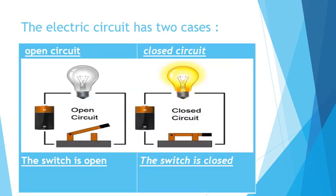The electric circuit has two cases: it's either opened or closed. The components of the circuit are four: a battery, a lamp, a wire, and a switch. This switch is either opened or closed. If the switch is opened, this means we have an open circuit. And if the switch is closed, this means we have a closed circuit.